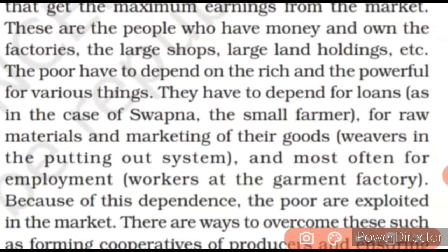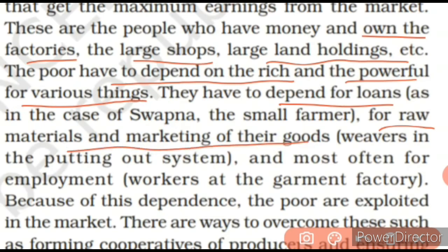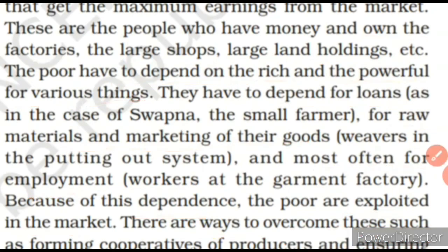These are the people who have money and own factories, large shops, and large land holdings. The poor have to depend on the rich and powerful for various things — first they take loans for their crops, then they produce the crop, and then whatever benefit there is, the upper class people take it all away. They have to depend for loans, for raw material, and market of their goods, and most often for employment. Because of this dependency, the poor are exploited in the market.